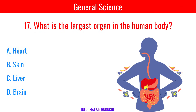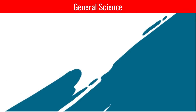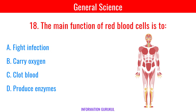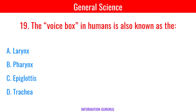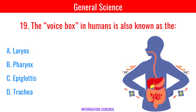What is the largest organ in the human body? Skin. The main function of red blood cells is to carry oxygen. The voice box in humans is also known as the Larynx.